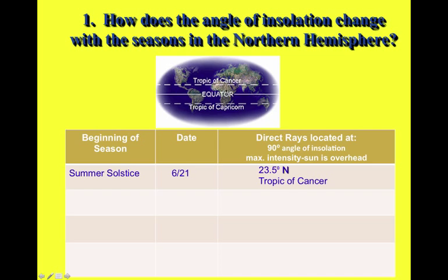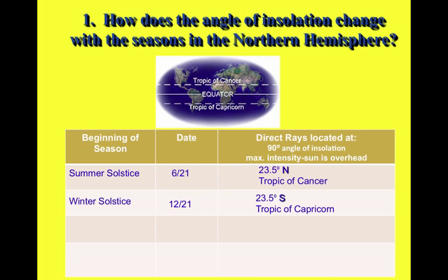The direct rays of insolation — direct sunlight — are always between the Tropic of Cancer and the Tropic of Capricorn. They never go further north or further south than that. The winter solstice is the first day of winter in the Northern Hemisphere, occurring on December 21st. Since December 21st is the beginning of our winter season, when it starts to get colder here, the direct insolation will be farthest from us, located at the Tropic of Capricorn at 23.5 degrees south.